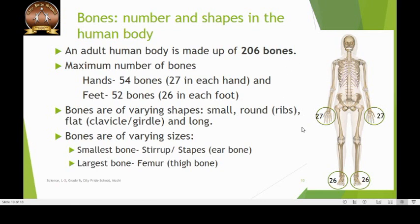The smallest bone in the human body is a bone in the inner ear called the stapes or the stirrup. The longest bone in the human body is the femur or the thigh bone, and the hardest bone in the human body is the lower jaw or the mandible.